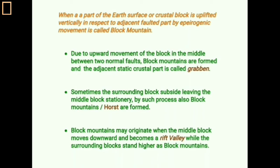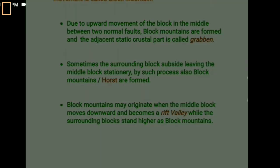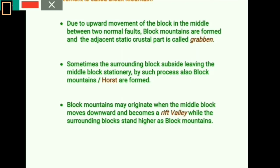There are three processes by which block mountains are formed. In the first process, a crustal block is divided into three parts by two parallel faults, and the middle segment is uplifted vertically to form the block mountain. The two adjacent areas which remain static are known as the graben. The middle part that is uplifted is known as the horst or block mountain.